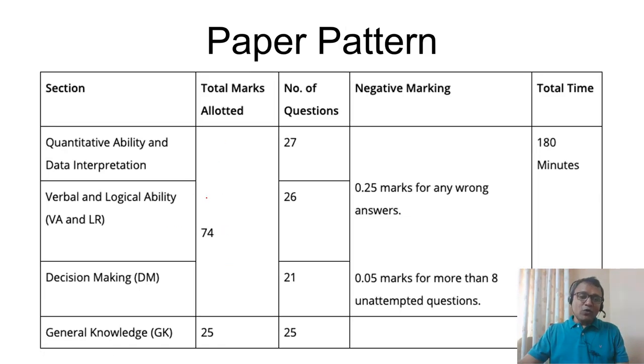The pattern of the paper has a quant section with quant and DI, a verbal section with verbal and critical reasoning, and a decision making section. GK is a separate section not considered for cutoff. Focus on the first three sections. Don't focus so much on GK that you lose out on other sections.